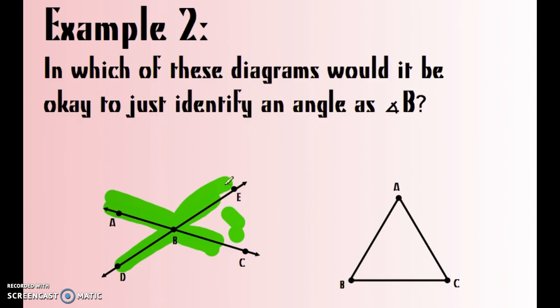In the second, in the triangle, if you said angle B, that's the vertex, there's really only one choice. So the triangle is a good place to identify just angle B.